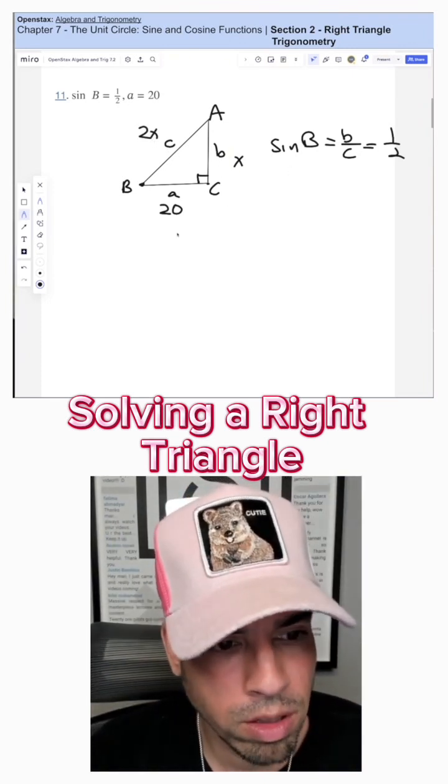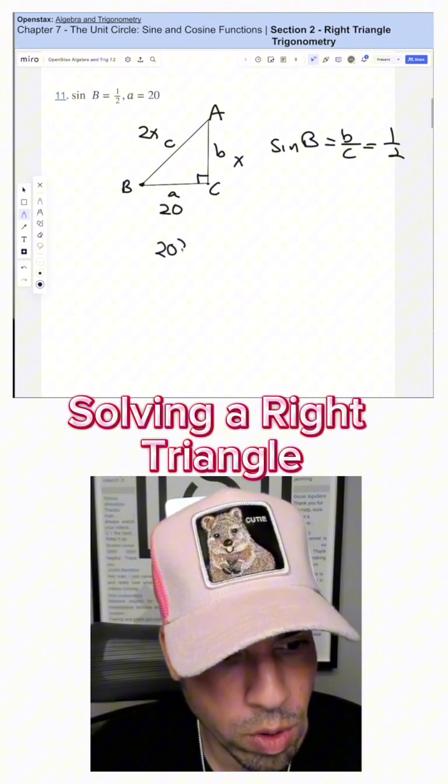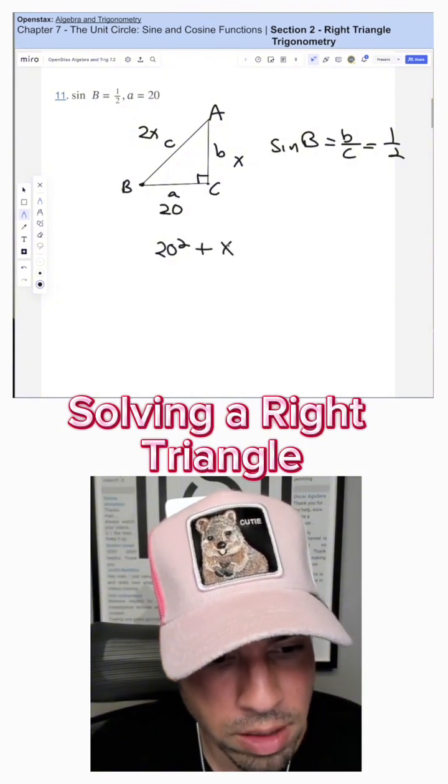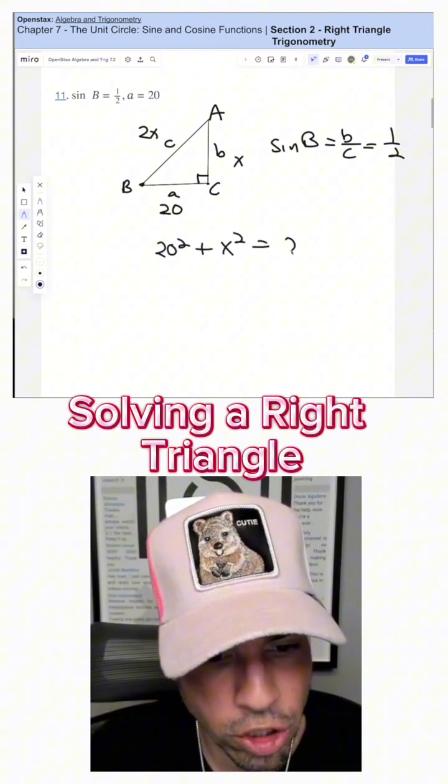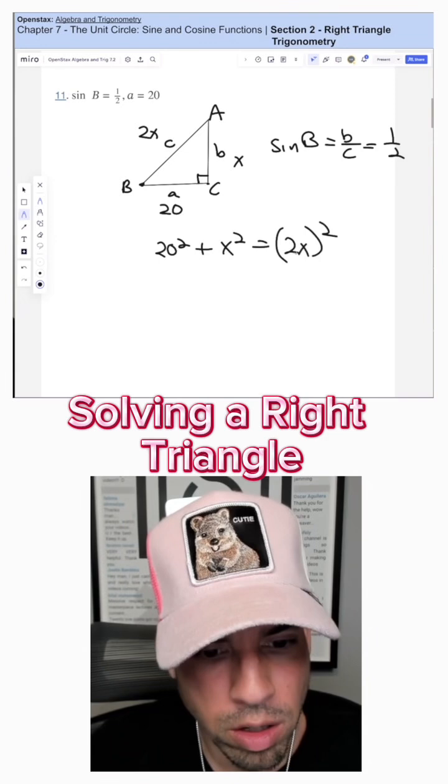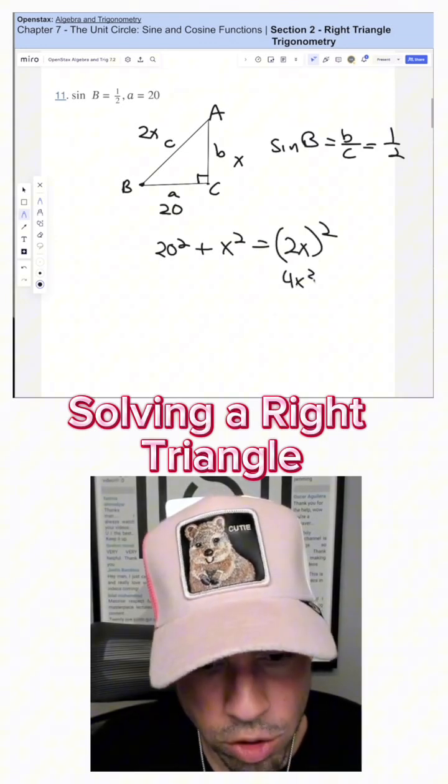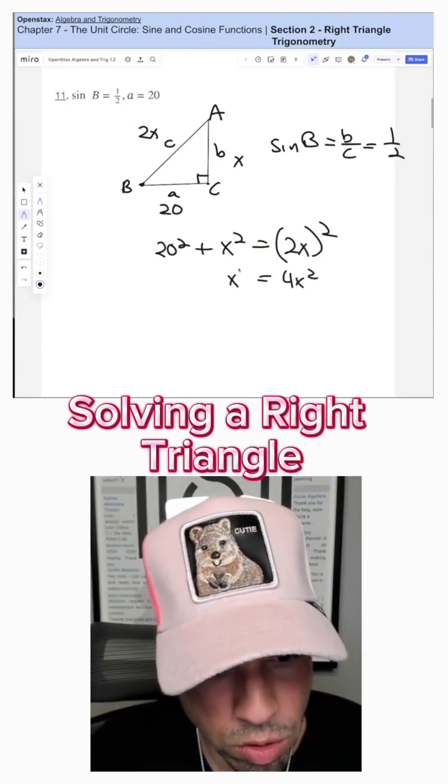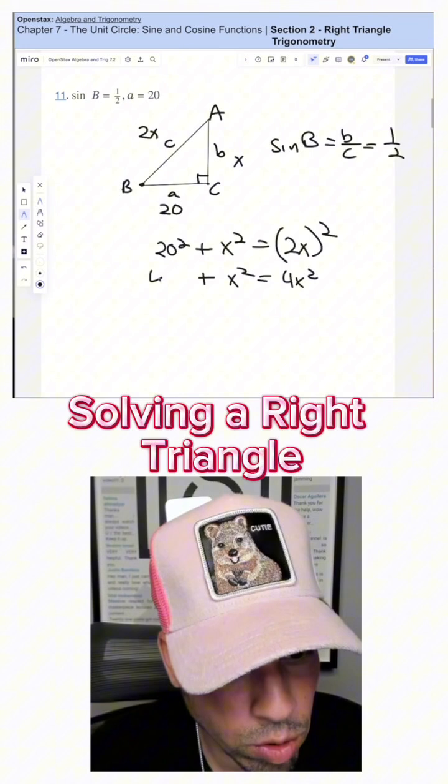So now using Pythagorean's Theorem, I can say A, which is 20 squared, plus B, which I'll call X, as X squared, equals C squared, which is 2X squared. And then 2X squared is 4X squared, right? So 4X squared equals X squared plus 20 squared, which is 400.